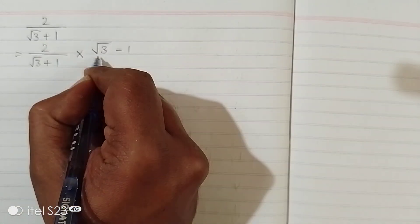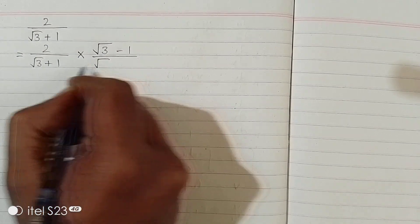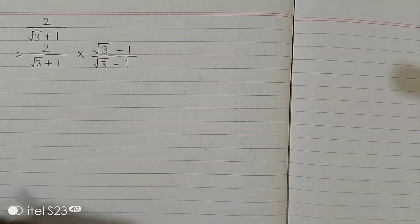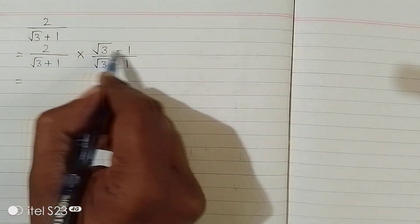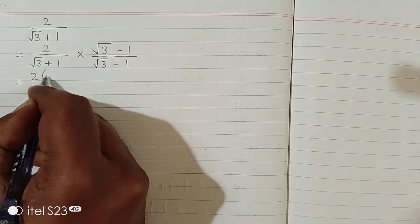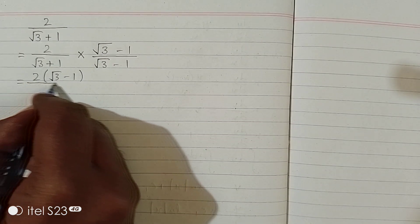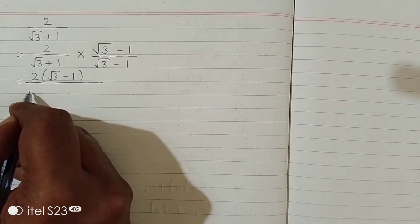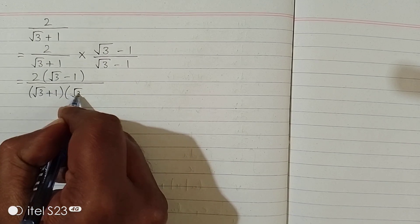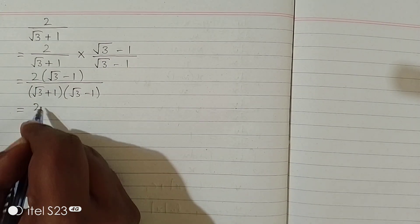So we have to multiply and divide this fraction by square root of 3 minus 1. Now 2 multiplied by this gives 2 times (square root of 3 minus 1), and in the denominator we have (square root of 3 plus 1) multiplied by (square root of 3 minus 1).